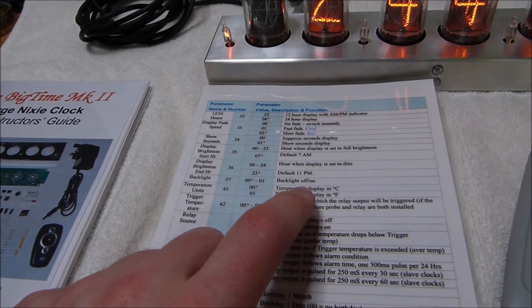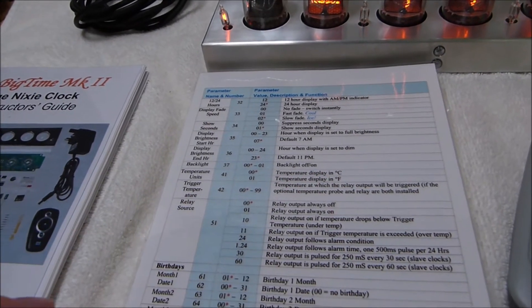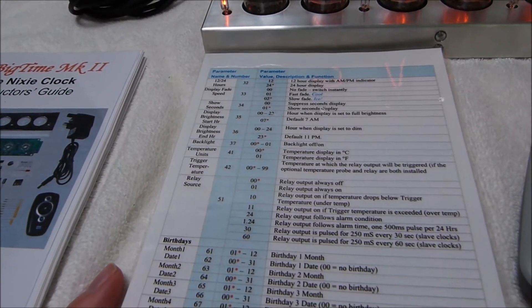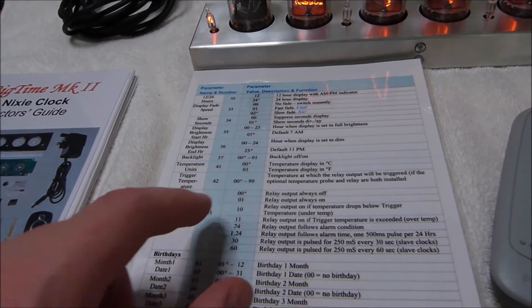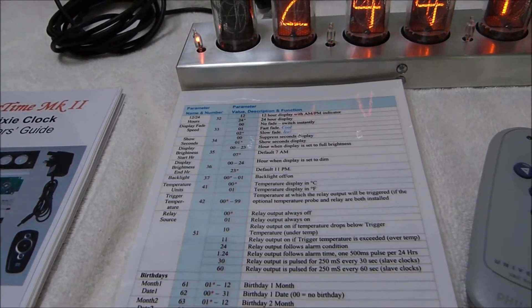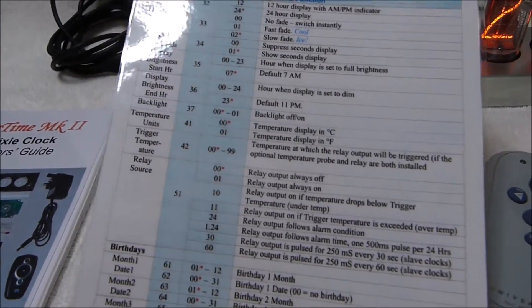While you can select between display in Celsius and Fahrenheit, you cannot adjust the offset of the temperature. So if the temperature is incorrect, there's really not much you can do about that, unfortunately.